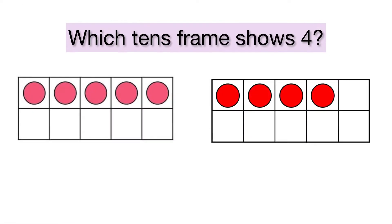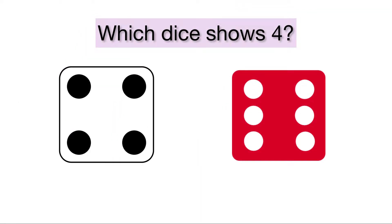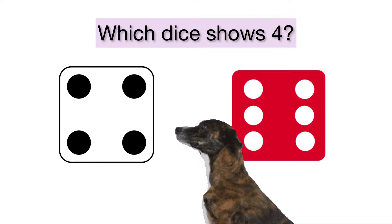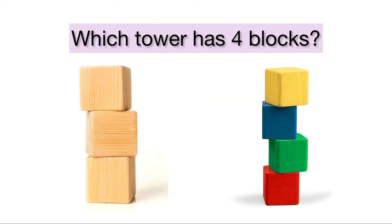Which tens frame shows the number four? Well done! The tens frame on the right has four dots. Which dice shows four? That's right! The dice on the left represents the number four. Which tower has four blocks? The tower on the right has four blocks.